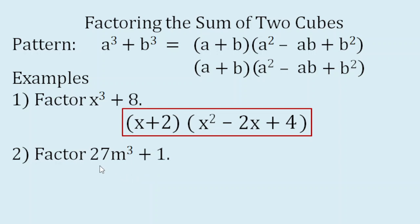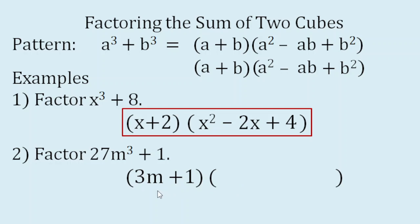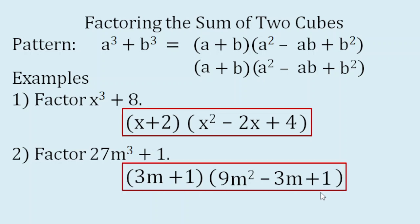For the second example, the cube root of 27M cube is 3M, and the cube root of 1 is still 1, so the binomial factor is 3M plus 1. For the trinomial factor: square 3M — 3M times 3M is 9M squared — followed by a minus sign. Then 3M times 1 is 3M. Then 1 times 1 is 1. So these are the factors: the quantity 3M plus 1 times the quantity 9M squared minus 3M plus 1.